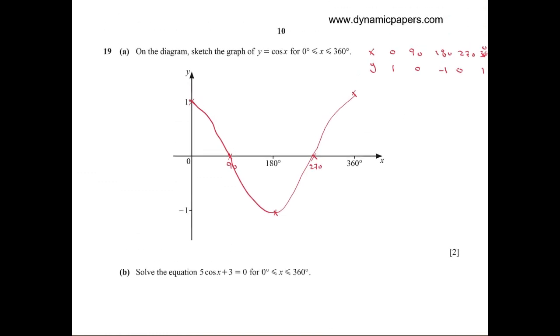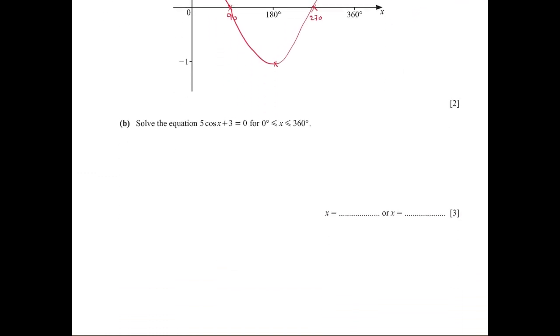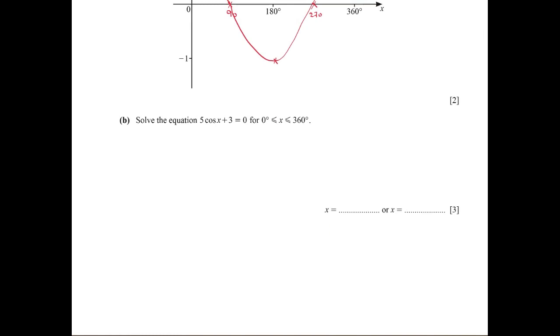Part b: Solve the equation 5cos(x) + 3 = 0. First, 5cos(x) = -3. Divide by 5: cos(x) = -3/5. Then x = cos inverse of -3/5, and we have two answers.